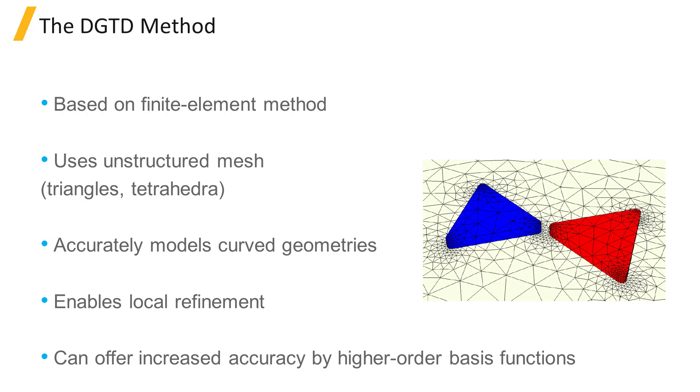So, for a 2D simulation, the mesh is formed of triangles and in 3D it is made of tetrahedra. This unstructured form of mesh can accurately model curved geometries and offers the ability to locally refine the simulation mesh for areas of interest.